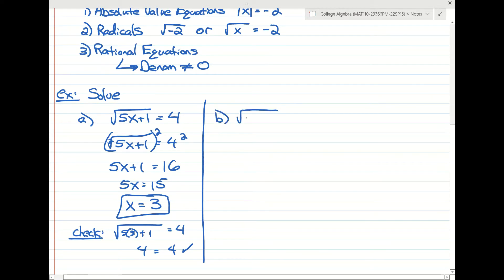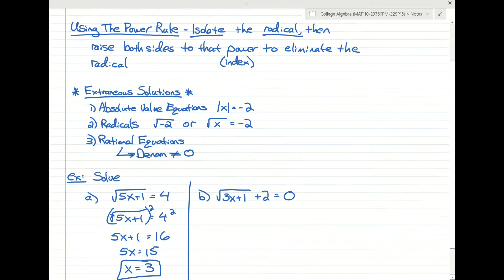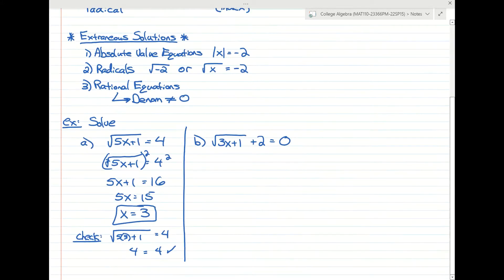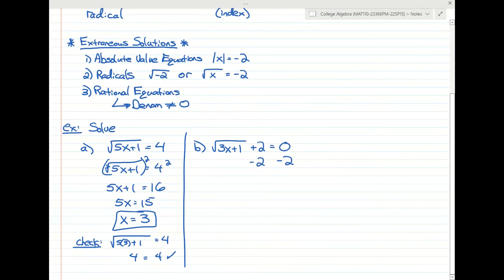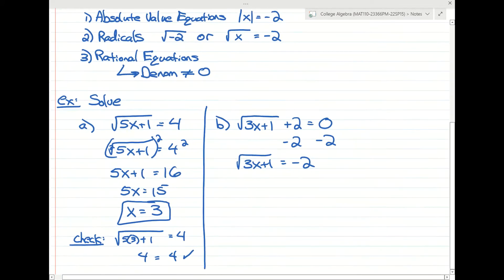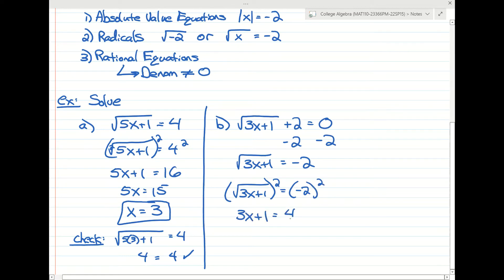What about the square root of 3x plus 1 plus 2 equals 0? Using the power rule, we first isolate the radical by subtracting 2 from both sides, giving us the square root of 3x plus 1 equals negative 2. Now that the radical is isolated, we raise both sides to the second power. We get 3x plus 1 equals 4. Subtracting 1 gives 3, and dividing by 3 gives x equals 1.